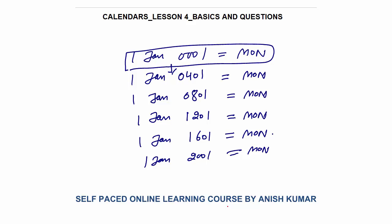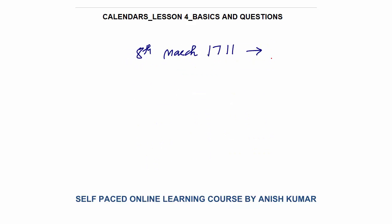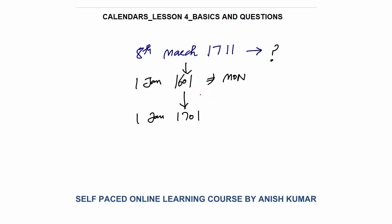Let me discuss a question: what will be the day on 8th of March 1711? These questions can be solved very easily. First go to the benchmark date — 1st January 1601 is Monday. Now go 100 years ahead to 1st January 1701: 100-year gap with 1700 as a non-leap year, so 5 odd days.